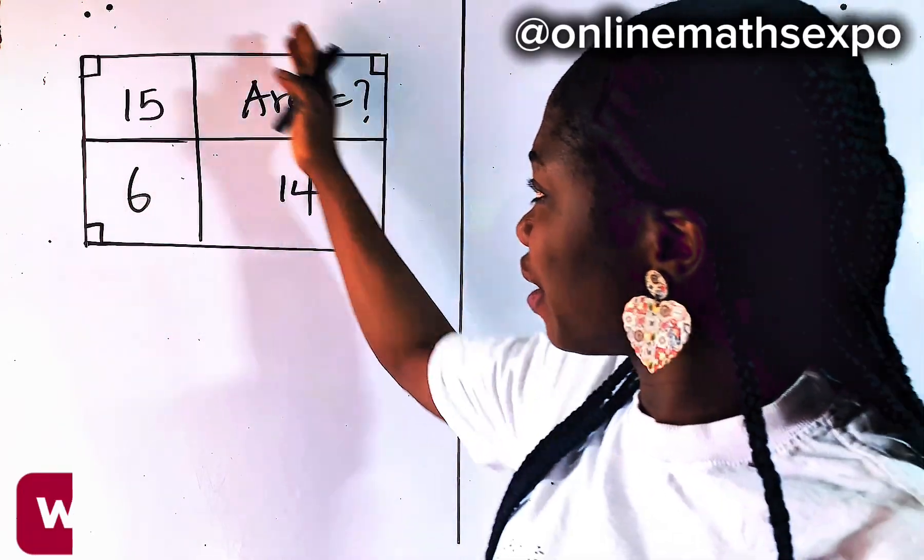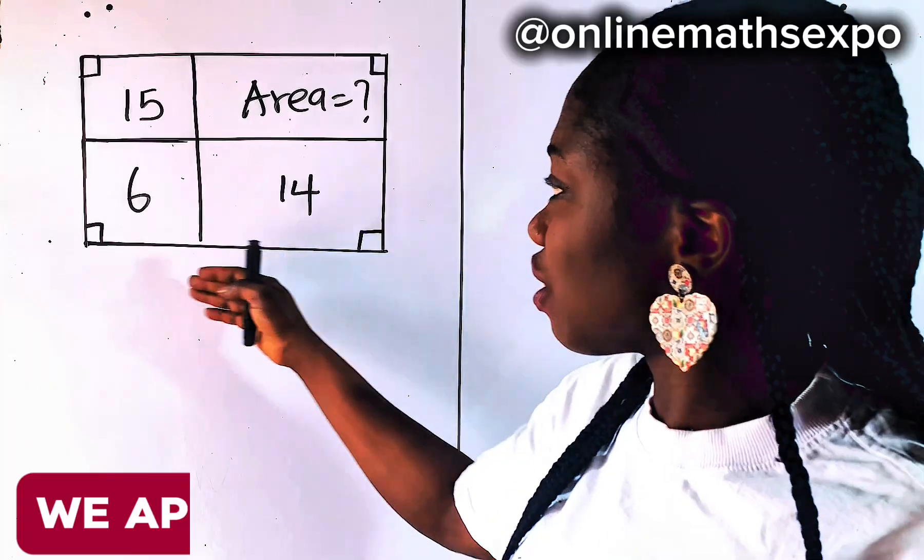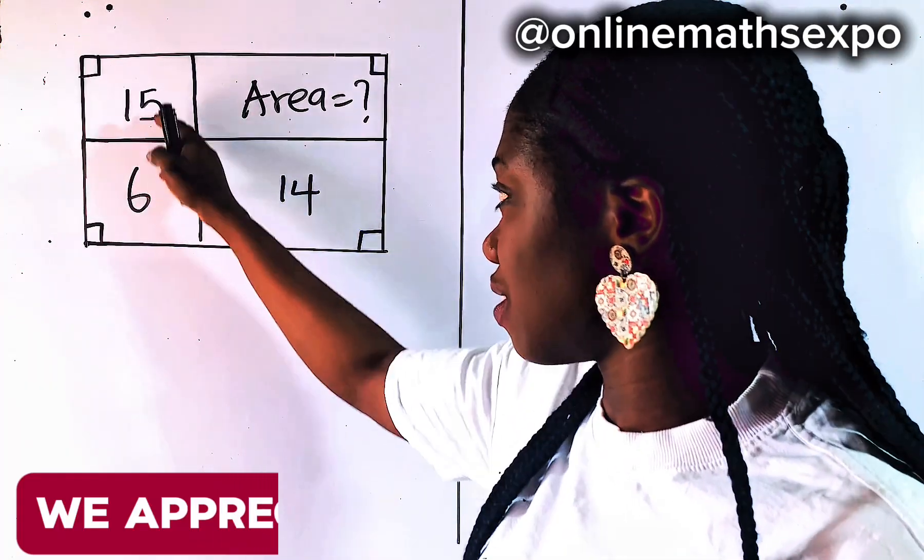Let's solve this together. We are given this diagram. This is your rectangle. And you see that this rectangle has parts. It has four parts in it.